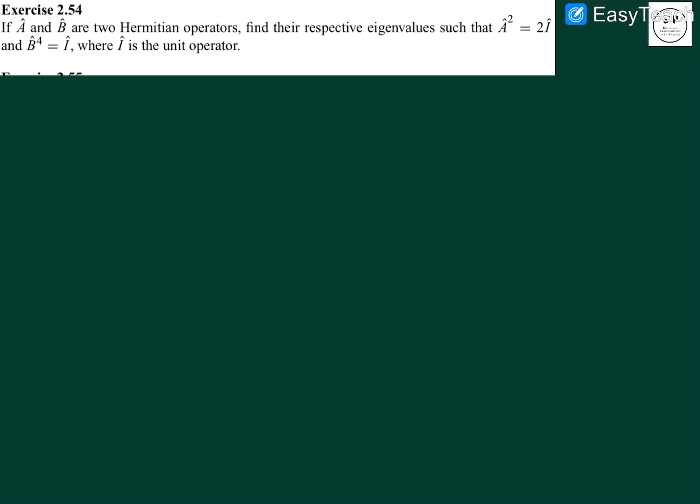Hello, let us solve the 54th question of second chapter from ZTD second edition. The question states that there are two Hermitian operators A and B and they have certain relations where A squared is equal to 2I and B to the power 4 equals to I, where I is a unit operator, basically an identity operator.